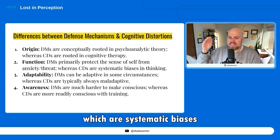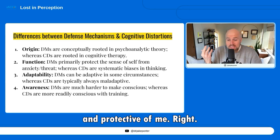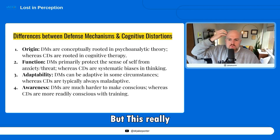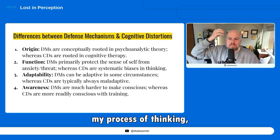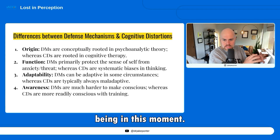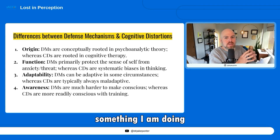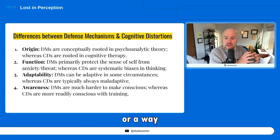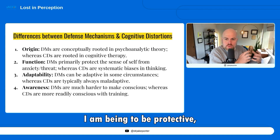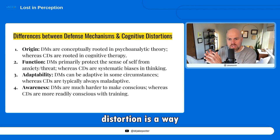Cognitive distortions are systematic biases in thinking — also protective of me — but this is really about my process of thinking, not my way of being in the moment. A defense mechanism is more something I am doing or a way I am being to be protective, whereas a cognitive distortion is a way I am thinking, a way I'm processing the data.